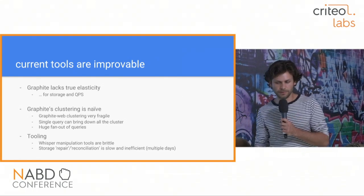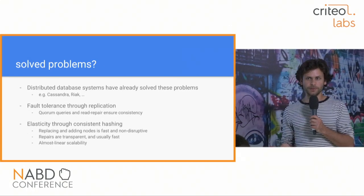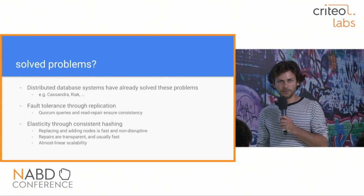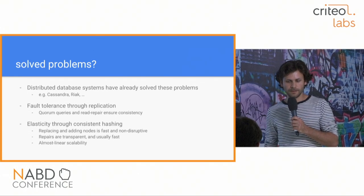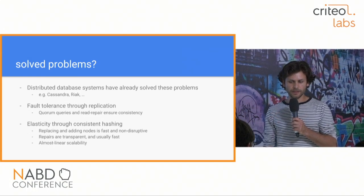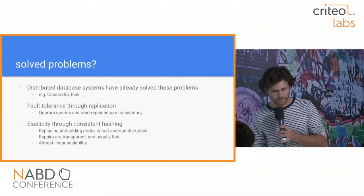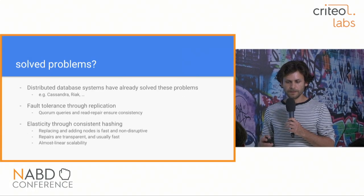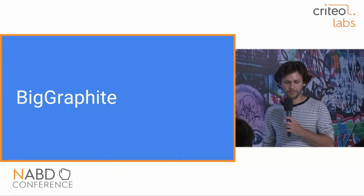All these distribution problems have been solved by other software. Cassandra, for instance, supports easy node addition — you just add the node, ask it to join, and you're done — and it handles replication and majority reads. Because this problem had been solved by others, we started thinking about integrating Graphite with Cassandra, and that's how Big Graphite became a thing.